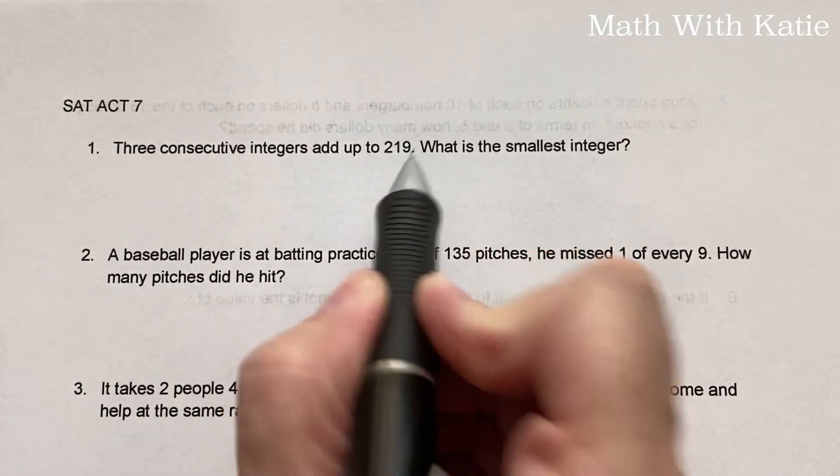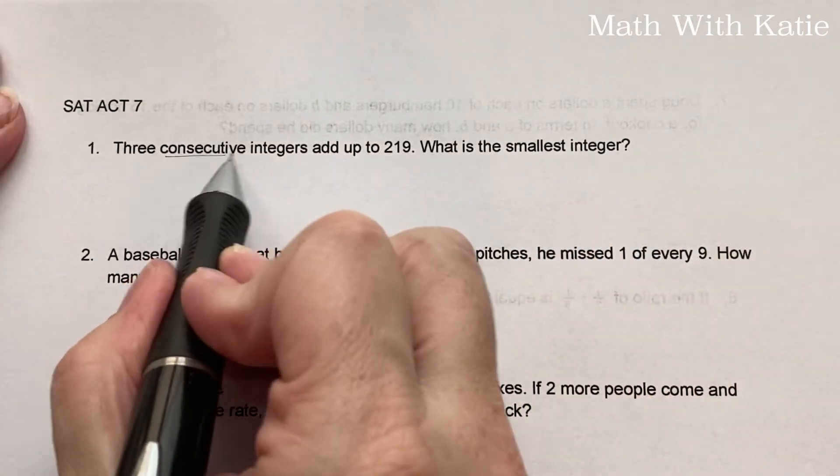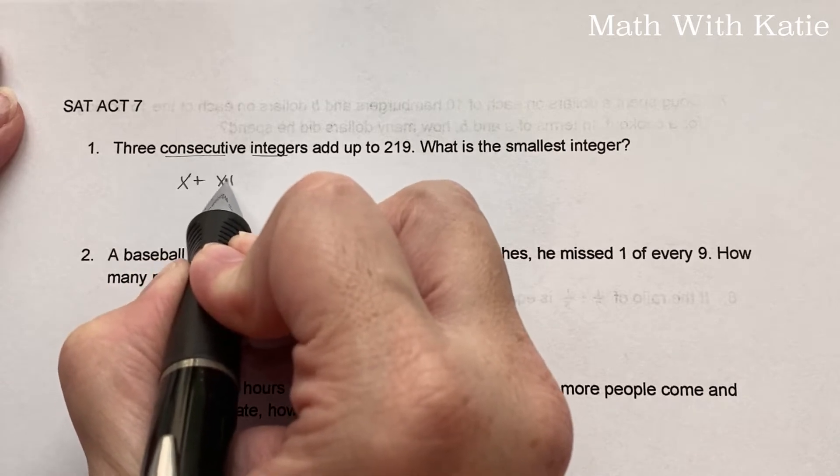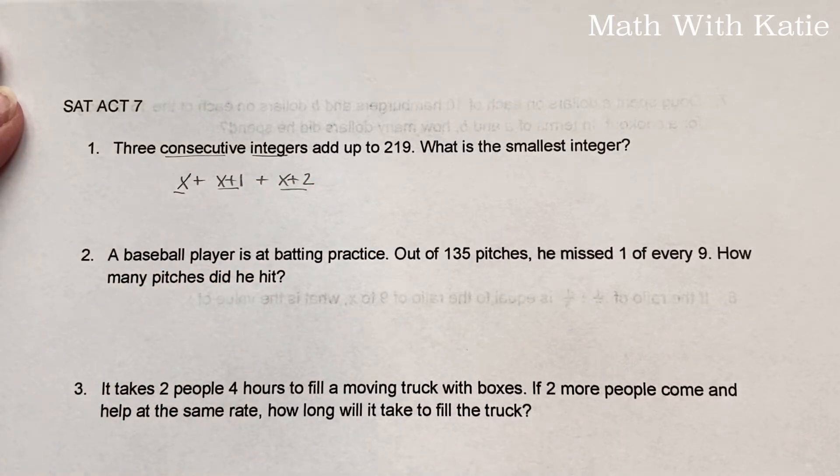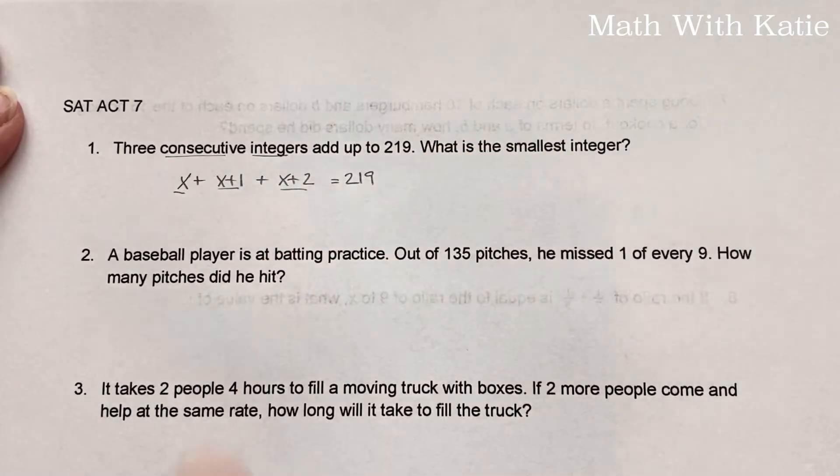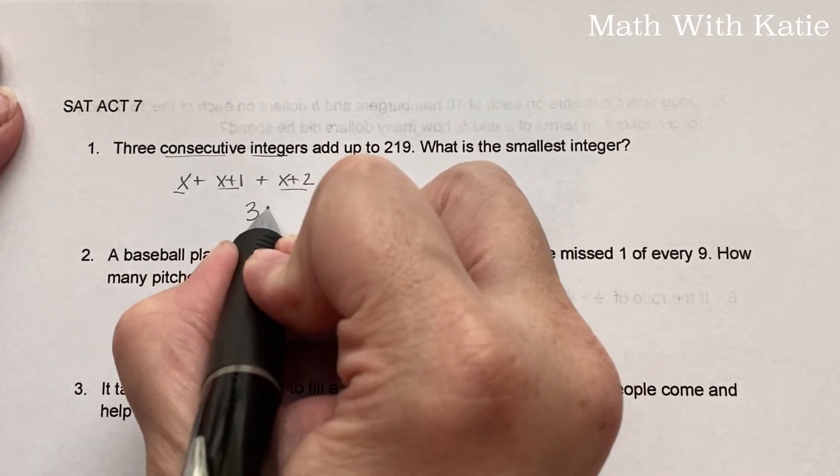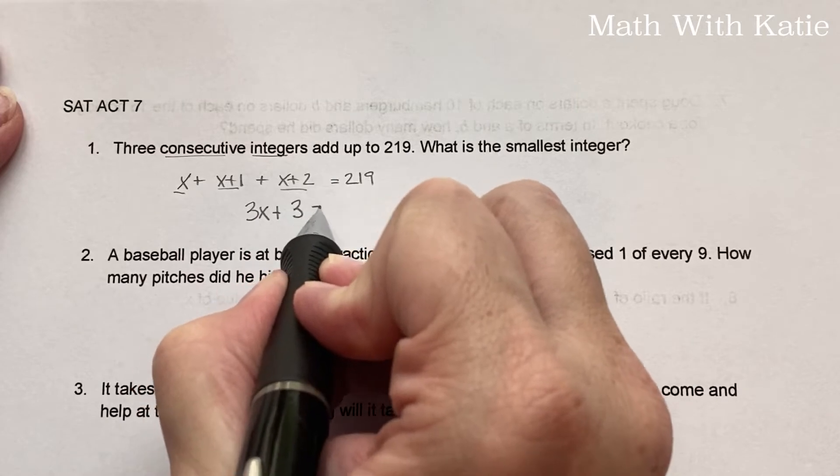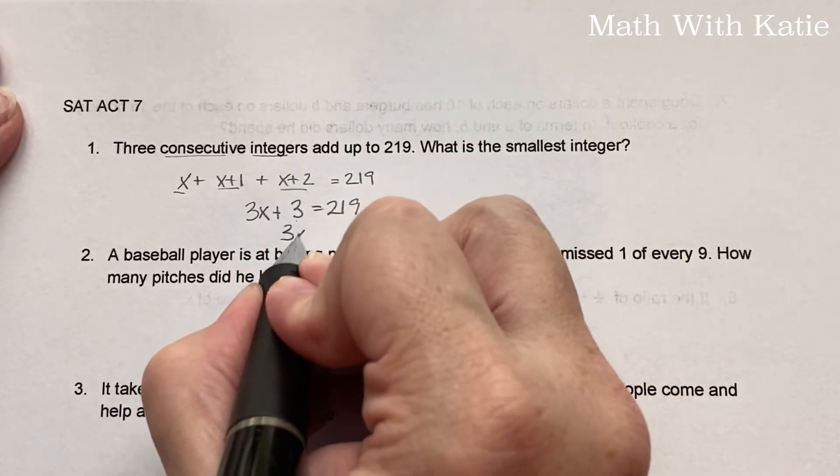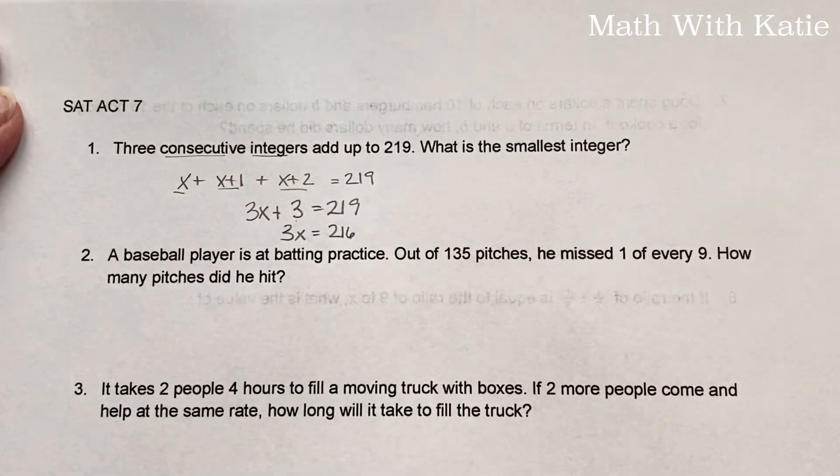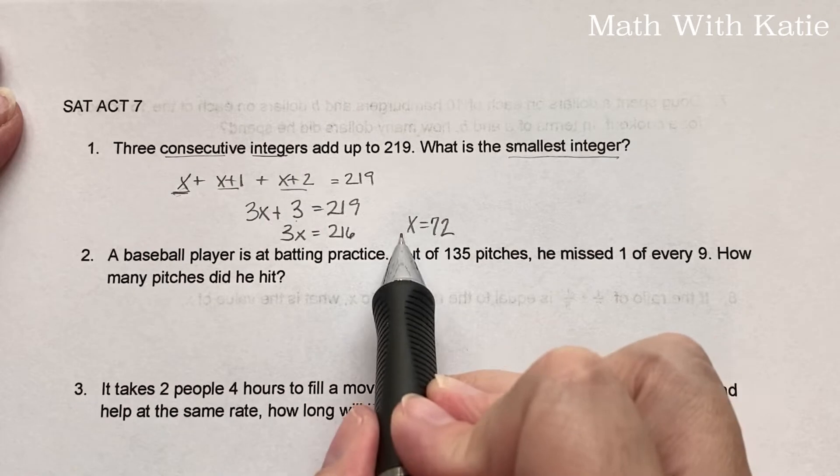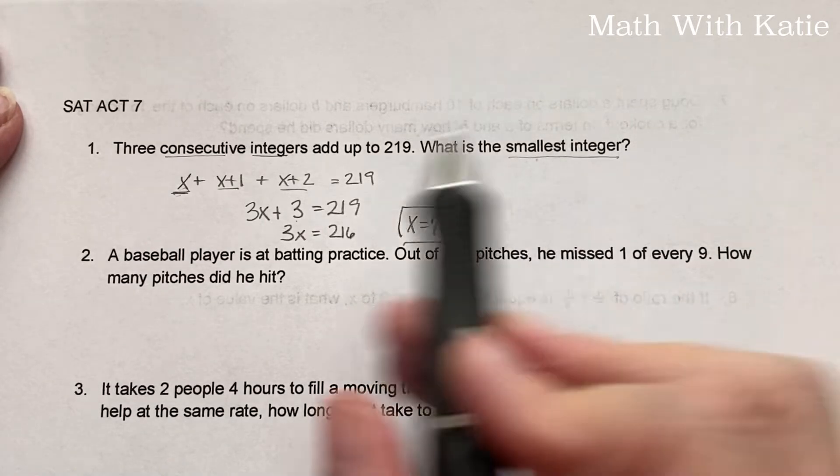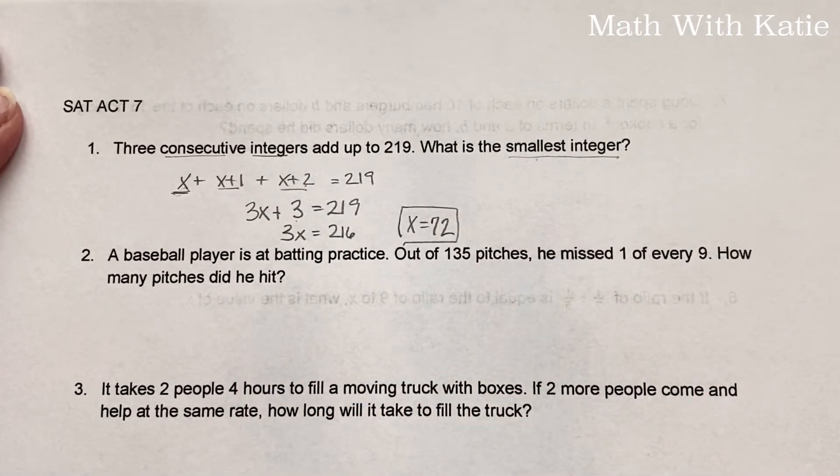Three consecutive integers add up to 219. What is the smallest integer? Alright, so consecutive integers means x plus x plus 1 plus x plus 2, and those are going to add up to 219. Now add up the x's together. So 3x plus 3 equals 219. Subtract 3 and then divide by 3. So we have 216 divided by 3, which is 72. So x equals 72. Now it wants to know the smallest integer. Since our smallest integer is x, that is our answer. If they had asked for the largest integer, you would have added 2 to this.